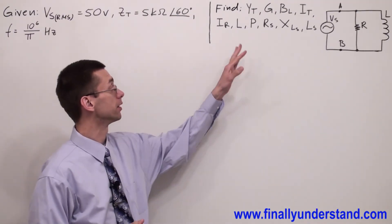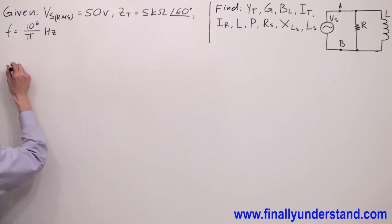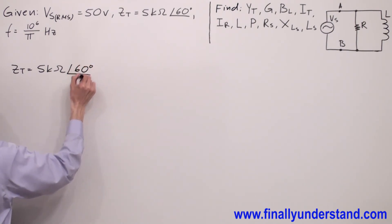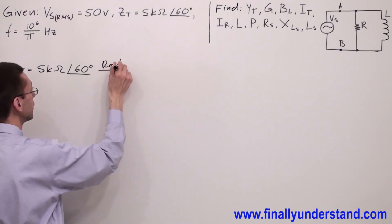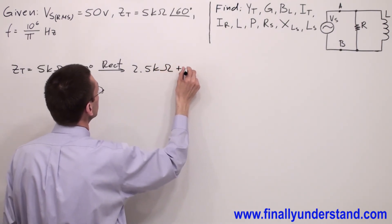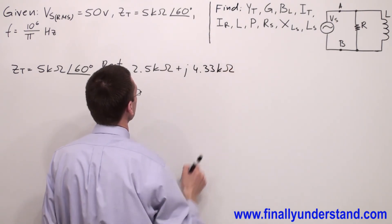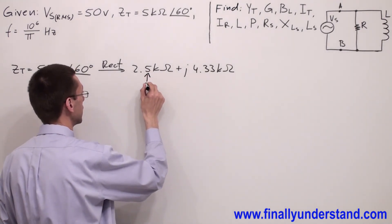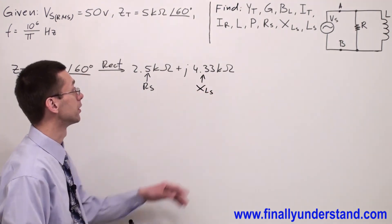Next, we have to find the series equivalent circuit. In order to find the series equivalent circuit, you're supposed to copy down the total impedance. Z-total equals 5 kΩ at an angle of 60 degrees. In order to find the components of the series equivalent circuit, you convert polar form to rectangular form, and you obtain 2.5 kΩ plus j4.33 kΩ. The real part represents resistance RS, and the imaginary part is XLs. So I found RS and XLs.